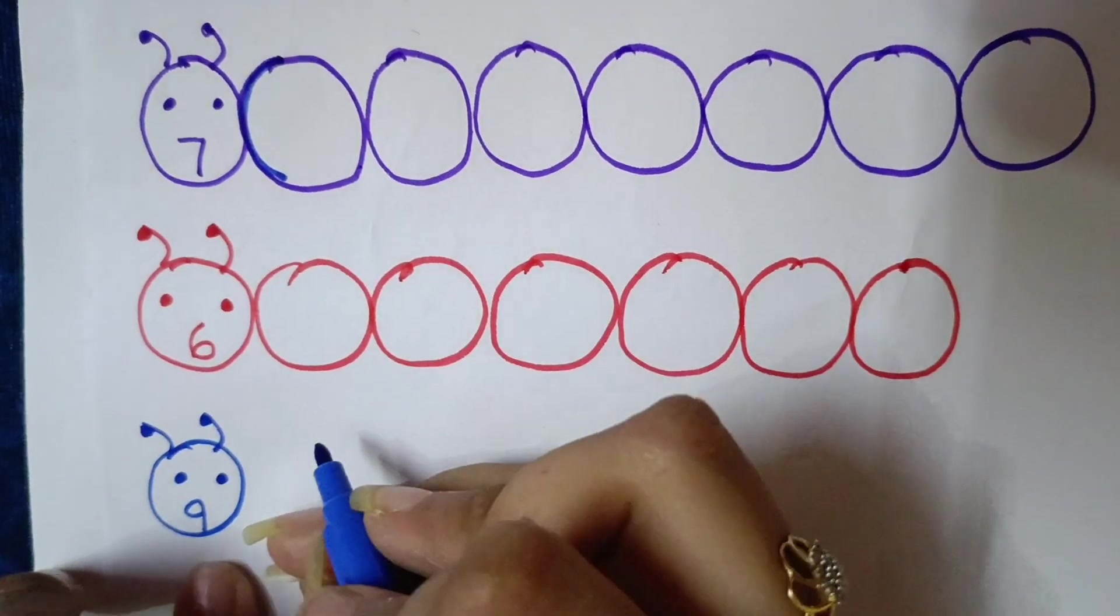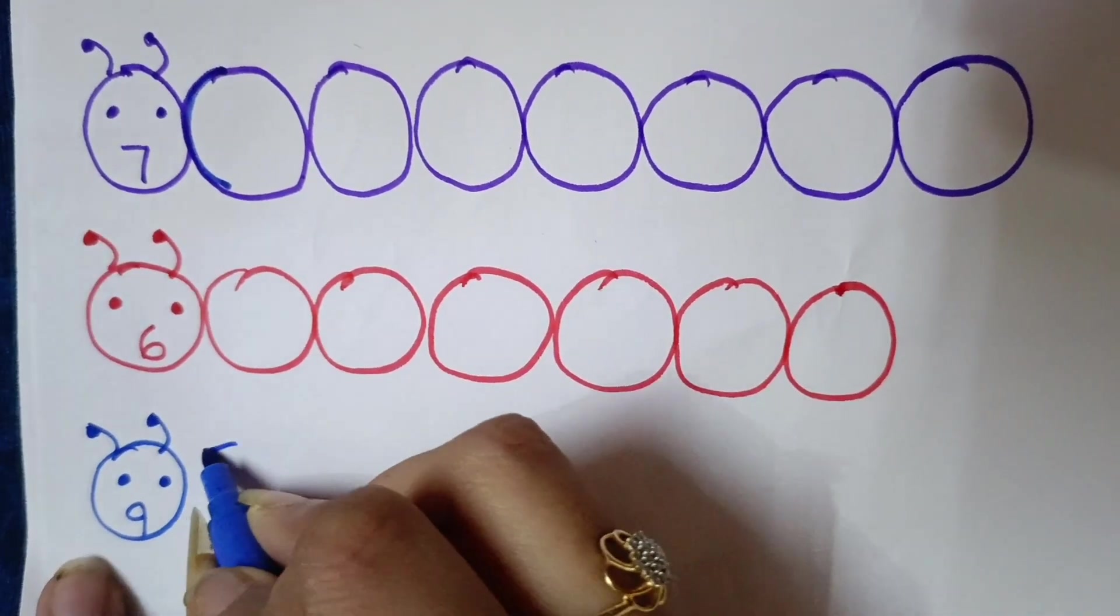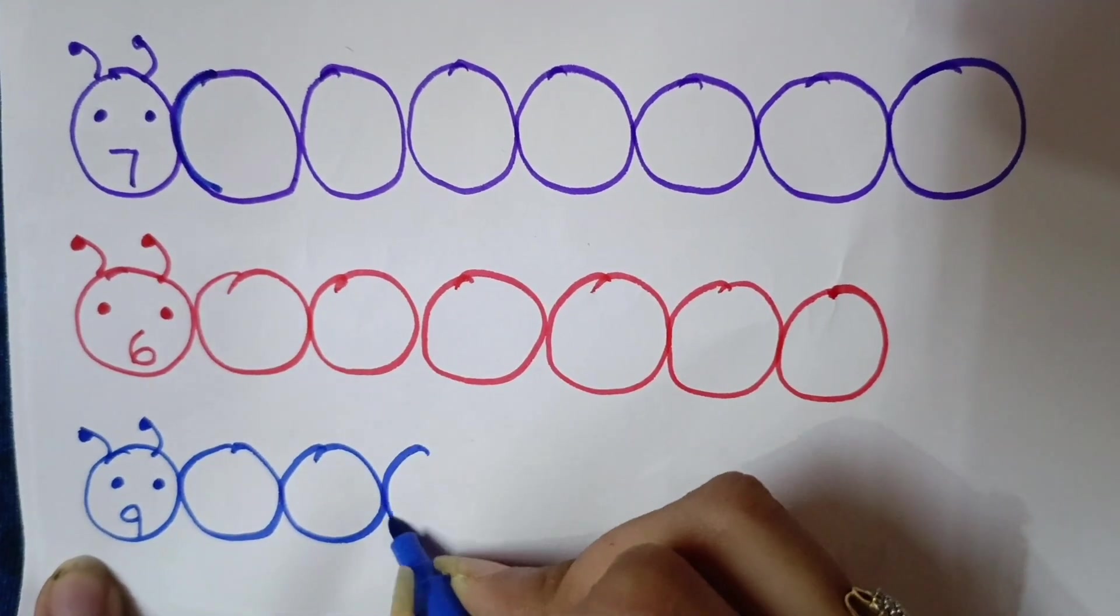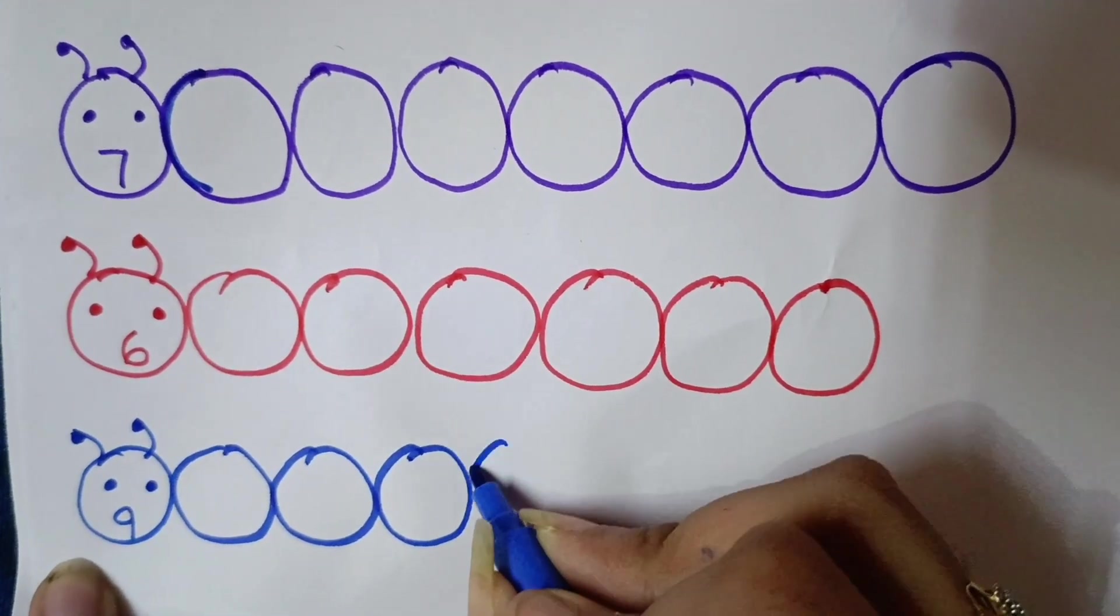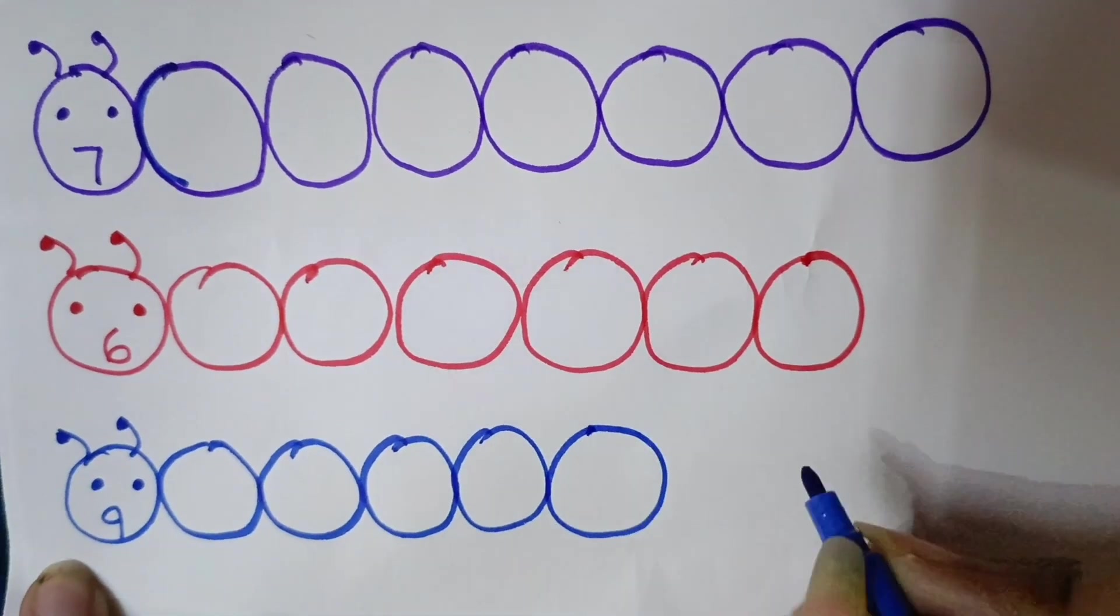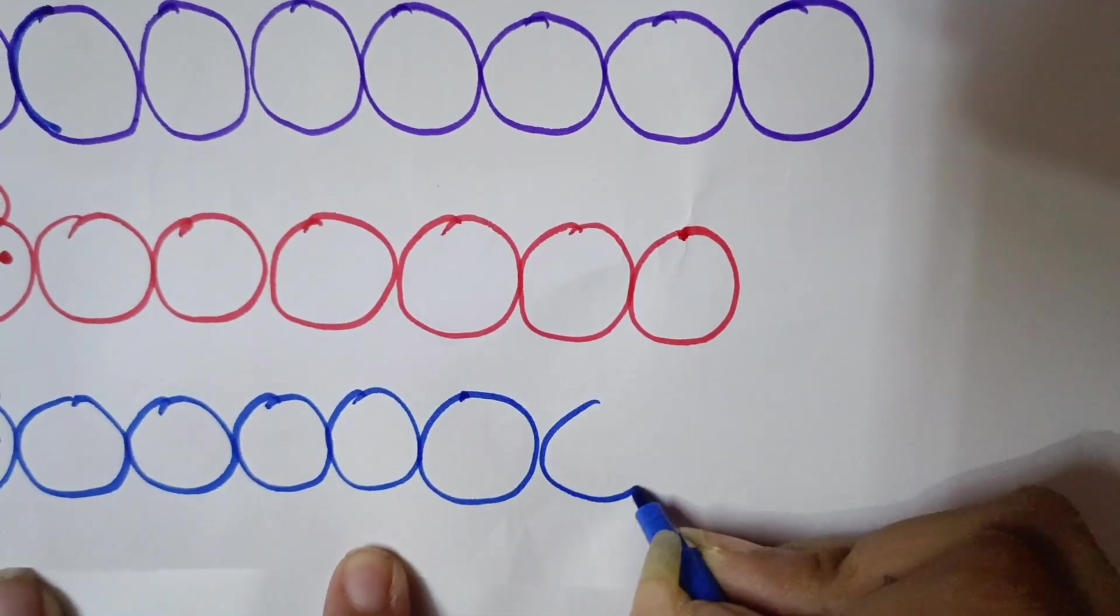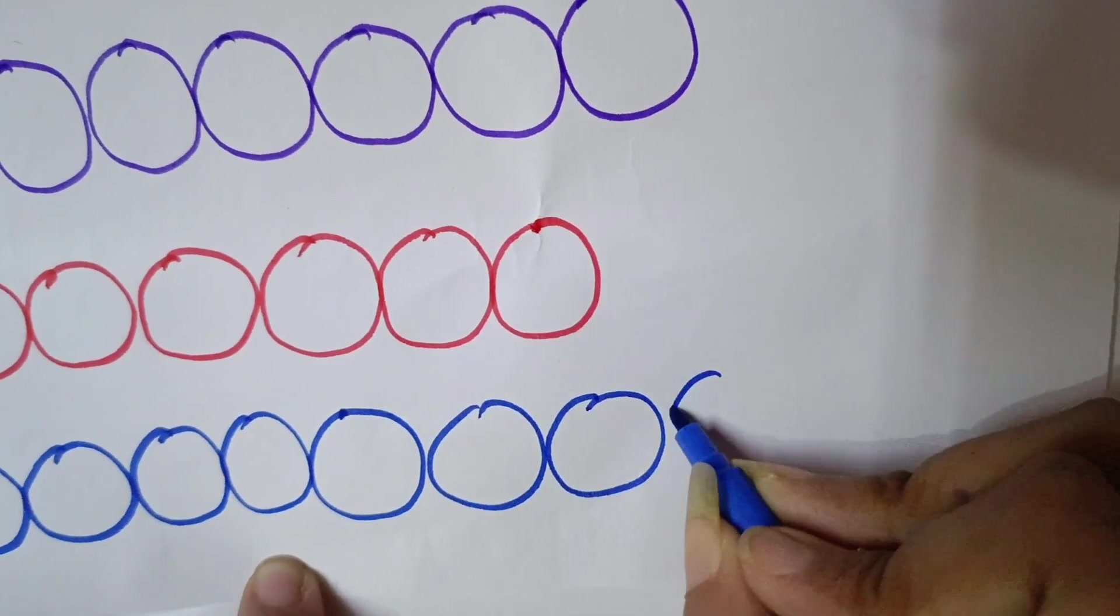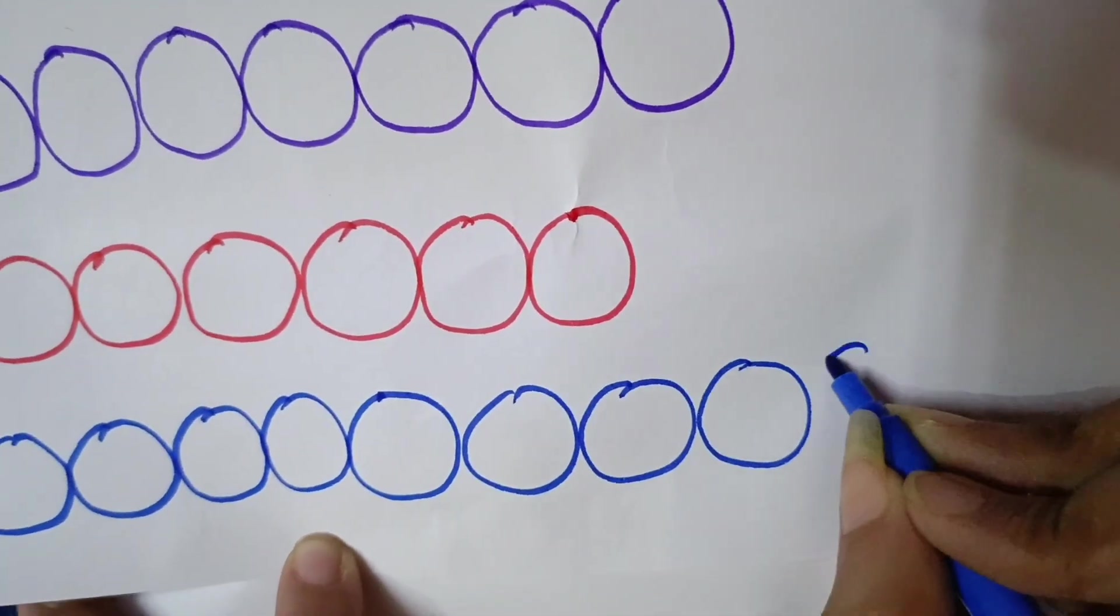Next is 9. So, we will draw here 9 circles. 1, 2, 3, 4, 5, 6, 7, 8 and the last is 9.